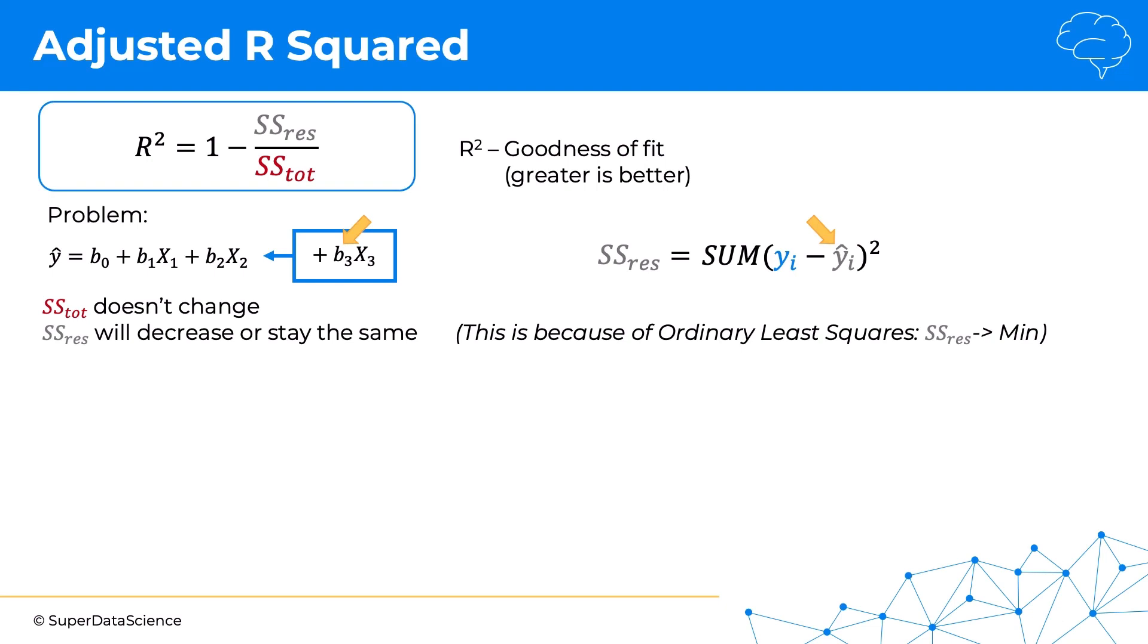In the situation where the ordinary least squares method cannot find a coefficient b3 that improves the predictions, like all possible coefficients b3 make the predictions worse, then the ordinary least square method is just going to be very smart or sneaky you can call it, and it's just going to turn b3 into zero. It's just going to say okay we're going to set b3 at zero, and that means even though we technically added an extra variable, it's not participating at all in the predictions because its coefficient is zero. So in that case, the residual sum of squares won't change, will be exactly as it was before.